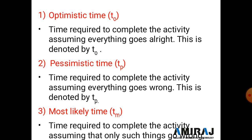Most likely time (tm) is the time required to complete the activity assuming that only some things go wrong. Here 'm' indicates most likely and 't' indicates time. It represents a scenario where some activities are completed on time and some require more time than planned.